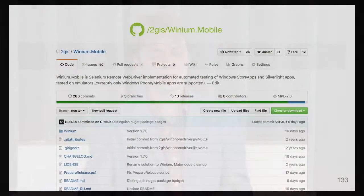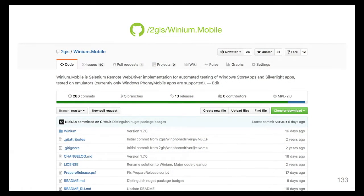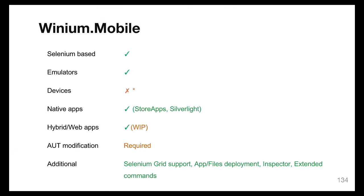We needed some tool to automate Windows Phone, which was quite popular in Russia. There were no automation tools available — not even tools provided by Microsoft, which was quite strange. So we wrote a project called Winium Mobile, which is completely open source on GitHub with documentation and samples. It's a WebDriver implementation that can drive automation of native applications on Windows Phone. It lets you run your tests on emulators; it doesn't work on devices by default, but you can work around that with some limitations.